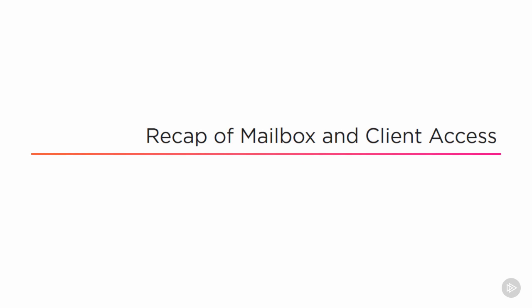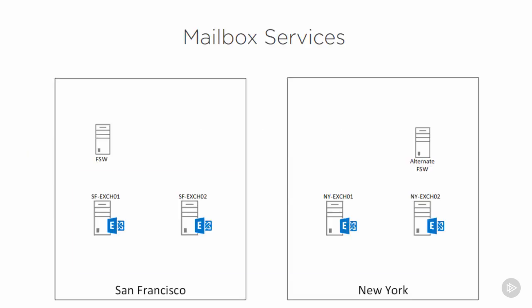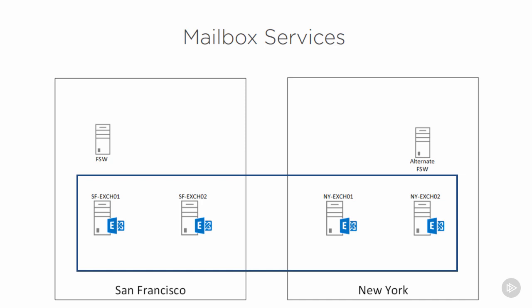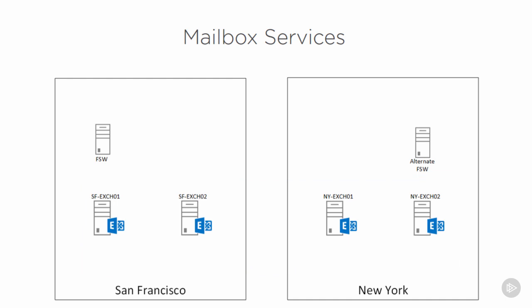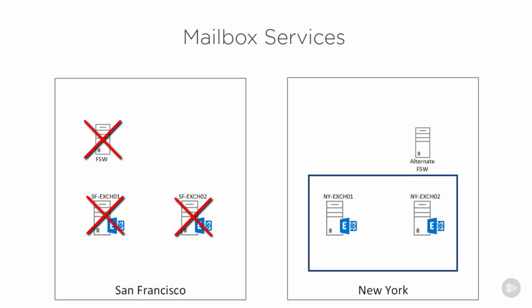If you haven't watched those courses in this series yet, don't worry - you'll learn about them in much more depth when you get to those courses, but for now this is just a quick overview. For mailbox services, we looked at deploying a Database Availability Group or DAG. With the right design, the DAG was able to keep databases online by failing over database copies to another replica if there was a failure of a single server. We also looked at how a whole data center could fail and a data center switchover could be performed to bring the DAG online in the secondary location.